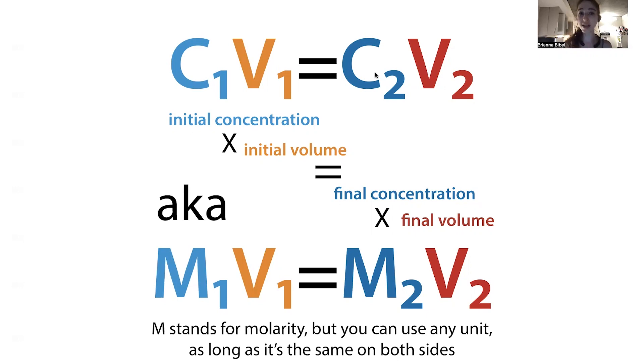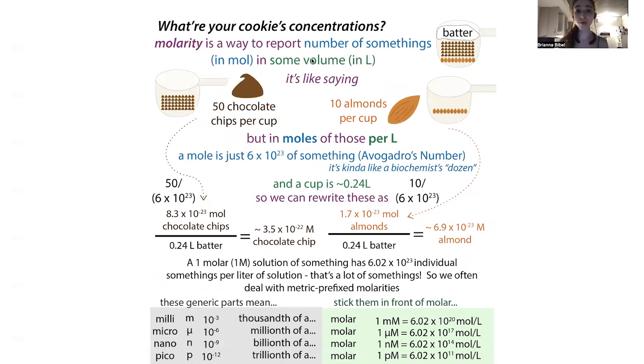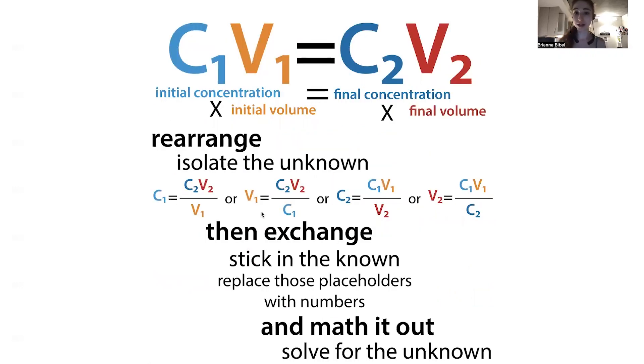We can solve for different components as long as we rearrange the formula to isolate whichever one is unknown, and then exchange. We stick in the known factors, replace these placeholders with actual numbers, and then math it out.